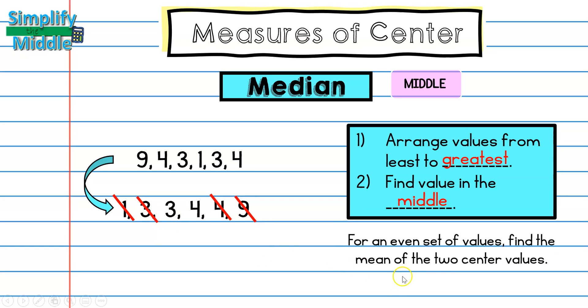I'm going to need to find the mean of those two center values. So remember our steps for mean were to add our data set together. So 3 plus 4. And then divide by how many numbers are in the data set, which is 2. So this just becomes 7 divided by 2. Or we could say 3 and a half.